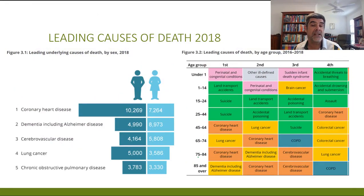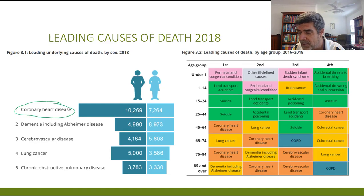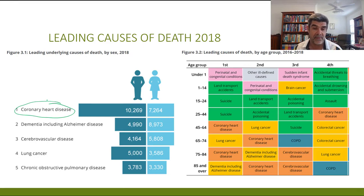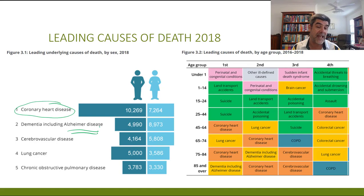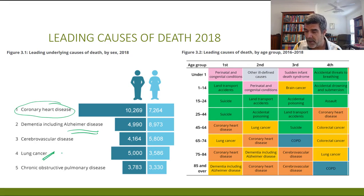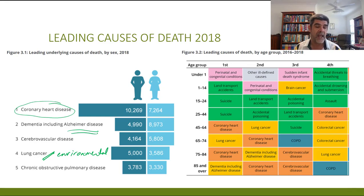If we go back to the leading causes of death in 2018, split between men and women, we can see that the number one cause for men was coronary heart disease. Dementia associated with things like Alzheimer's are definitely diseases that are more common amongst older people than younger people. Cerebrovascular diseases — the diseases associated with blood flow to the brain — and lung cancers, which can be influenced by environmental factors such as whether the individual smoked, are also significant. And chronic obstructive pulmonary disease. You can see the comparative figures for males and females.